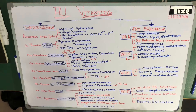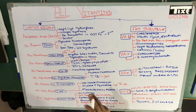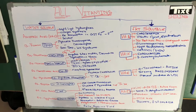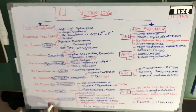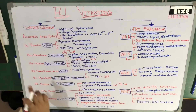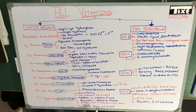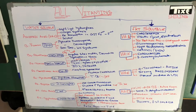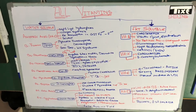Whenever anybody asks you what is the difference between megaloblastic and pernicious anemia, be really simple. In megaloblastic anemia, if you don't have cyanocobalamin, folic acid, or vitamin C, you are going to get megaloblastic anemia. If you don't have intrinsic factor, you're going to get pernicious anemia. So intrinsic factor is only concerned with cyanocobalamin, not anything else.